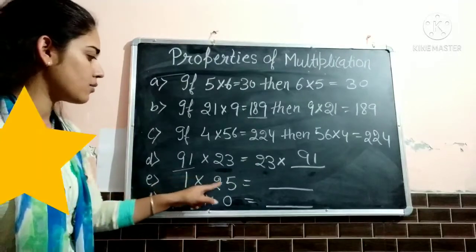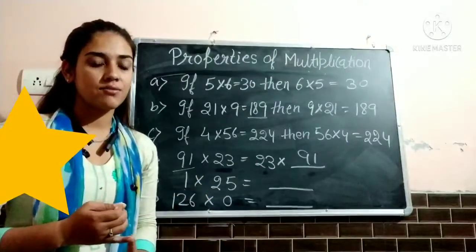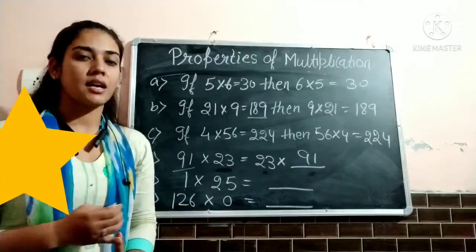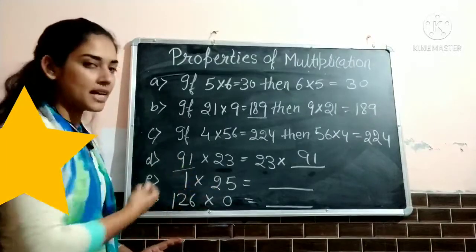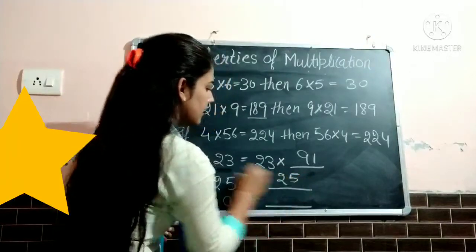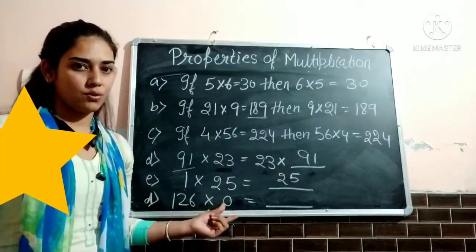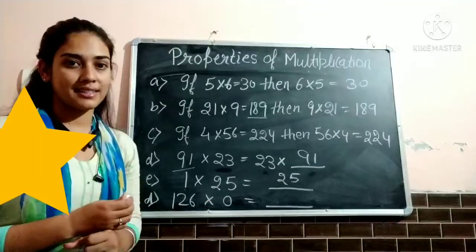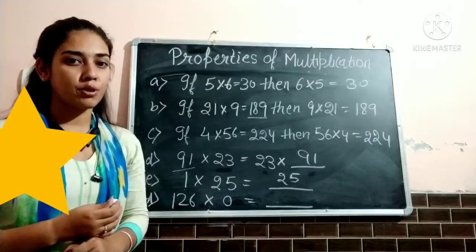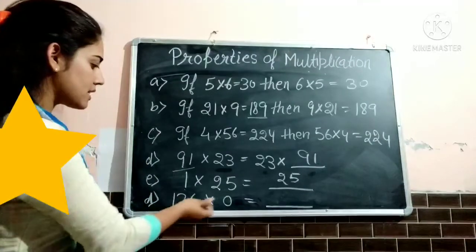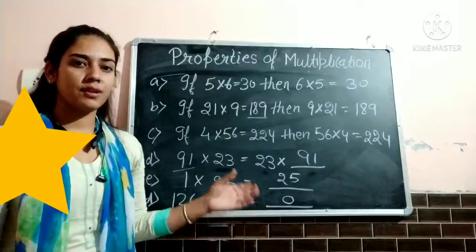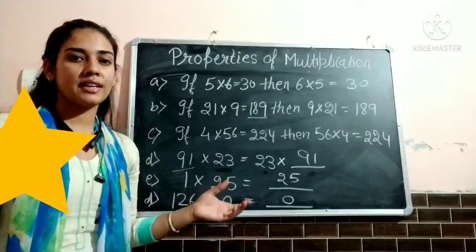Next is 1 multiply 25. We already discussed the property: the product of 1 and any number is the number itself. So 1 multiply 25 — 25 ones are 25. Next is 126 multiply 0. If we will multiply any number by 0 then the product is 0. So 126 multiply 0 equals 0. So students we applied here all the properties that we have already discussed.